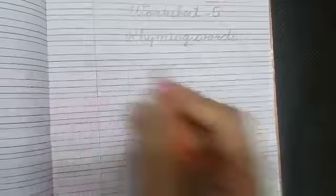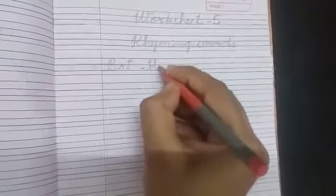Worksheet number is five and topic is rhyming words. So let's begin. First one is bat. The rhyming word for bat is hat: H-A-T, hat. Second one: red. Rhyming word for red is bed: B-E-D, bed.